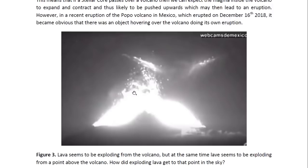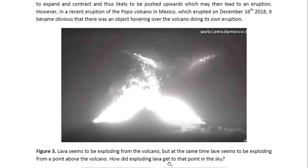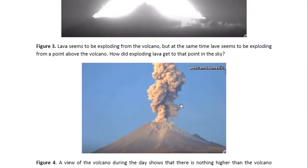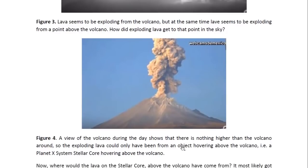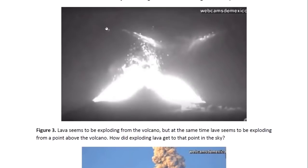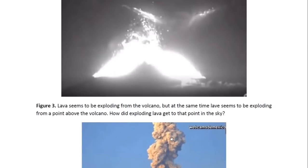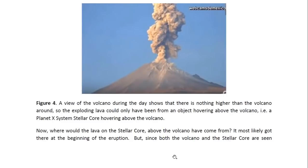And that can be seen here. You can see lava that seems to be exploding from the volcano, but at the same time, lava seems to be exploding from a point above the volcano — sideways, upwards and sideways. How did the exploding lava get to that point in the sky? If we look at the volcano during the day, you can see that there's nothing higher than the volcano. There's no land there for lava to be exploding from. So the only thing that could be there was one of the Planet X system stellar cores hovering over the volcano. Where would the lava on the stellar core above the volcano have come from?